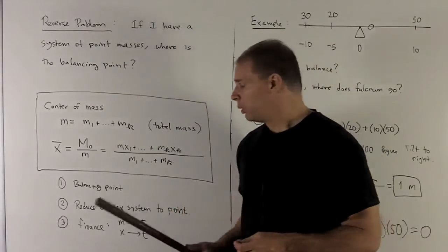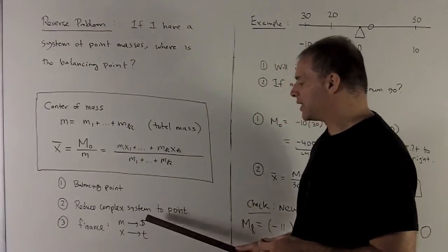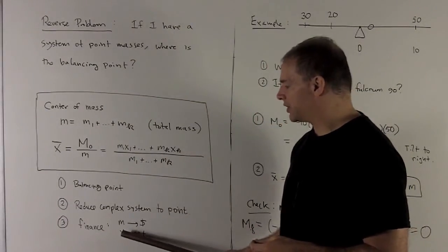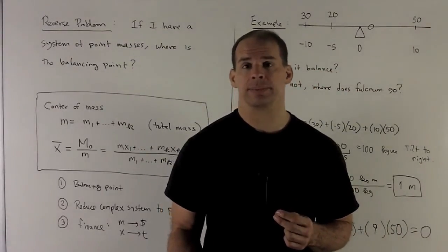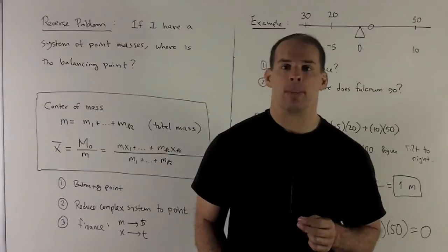Third interpretation: if you take mass, think of that as being money, and think of distance as turning into time, this becomes a useful idea to have around in finance. Let's do one more example.